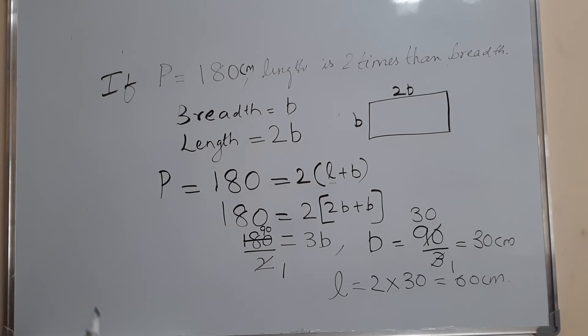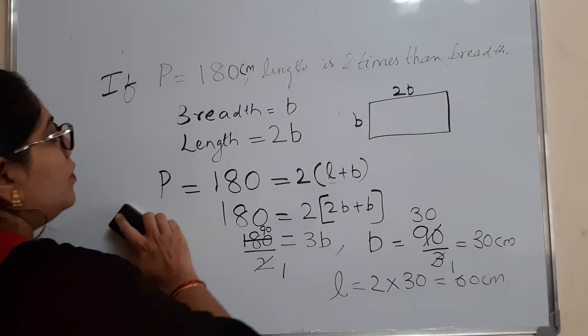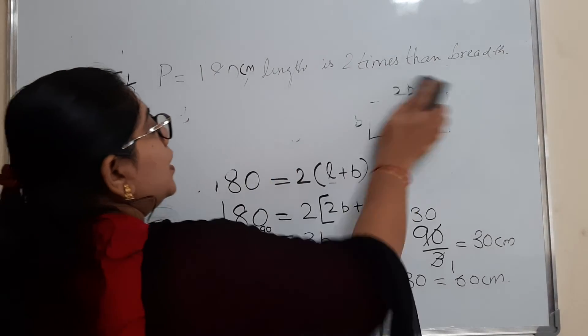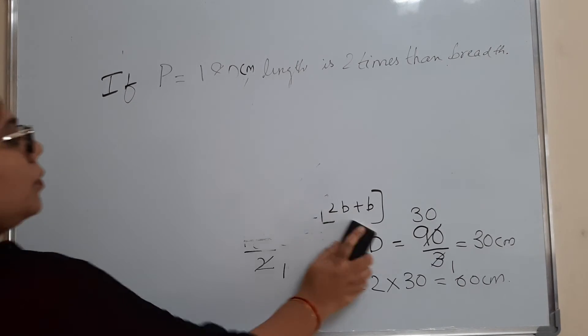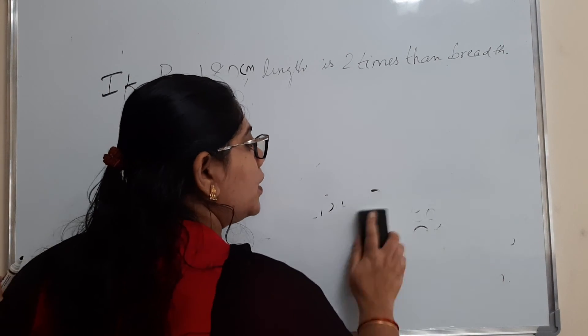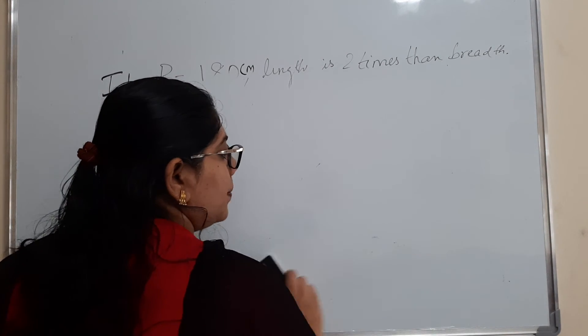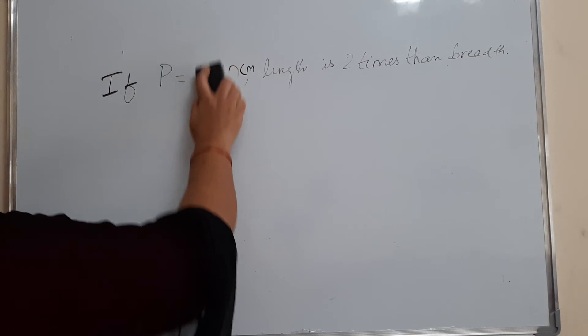So similarly, the questions they will give, like length is 3 times the breadth. So in that case, you want to write L is equal to 3B. So the question will change accordingly.